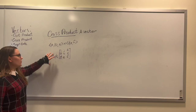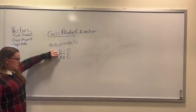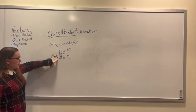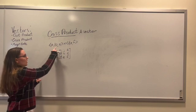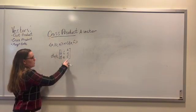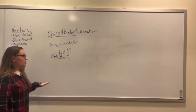To set a matrix, we want to put i, j, k on the top row, our first vector on the second row, and our second vector on the third row. So we have i, j, k, then A, B, C, and then D, E, F on the bottom. We're going to take the determinant of this matrix to find the cross product of these two vectors.